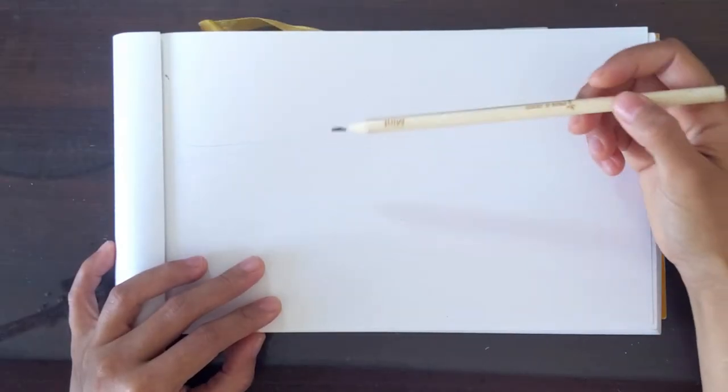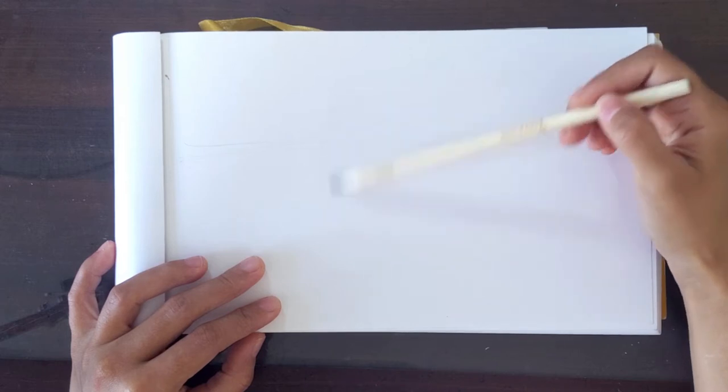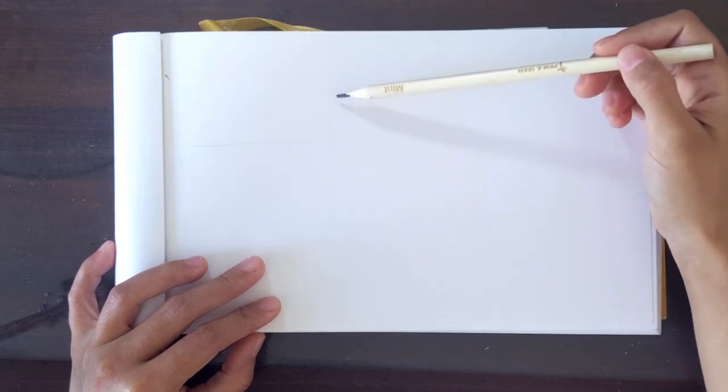Now it's time to draw. The first thing we will do is, we will plot the cup on the paper by drawing a square.